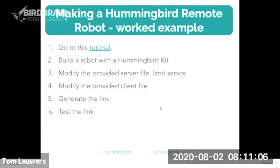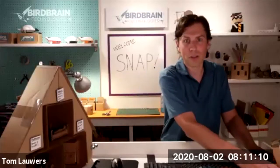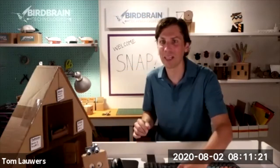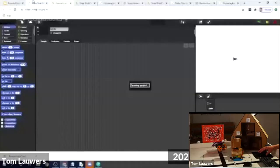Let's do a worked example of how to turn a Hummingbird kit — specifically this LB robot — into a fourth remote robot that you all will be able to program. I'm turning it on, it's connecting to the computer, and then I'm going to go to a tutorial I've created for everyone with Hummingbird kits to build their own remote robots. I've created pre-populated server and client files you just click on. Let's go to the server project for the Hummingbird Bit.